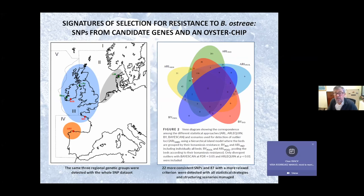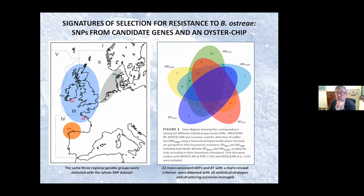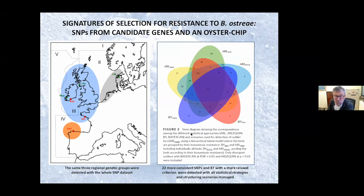In addition to the chip, we validated 37 SNPs associated with the candidate genes previously detected in the functional analysis, and one of those candidate genes was also detected in the outlier analysis, bringing us to 22 more consistent SNPs following a more stringent criterion, and 87 with a more relaxed criterion.